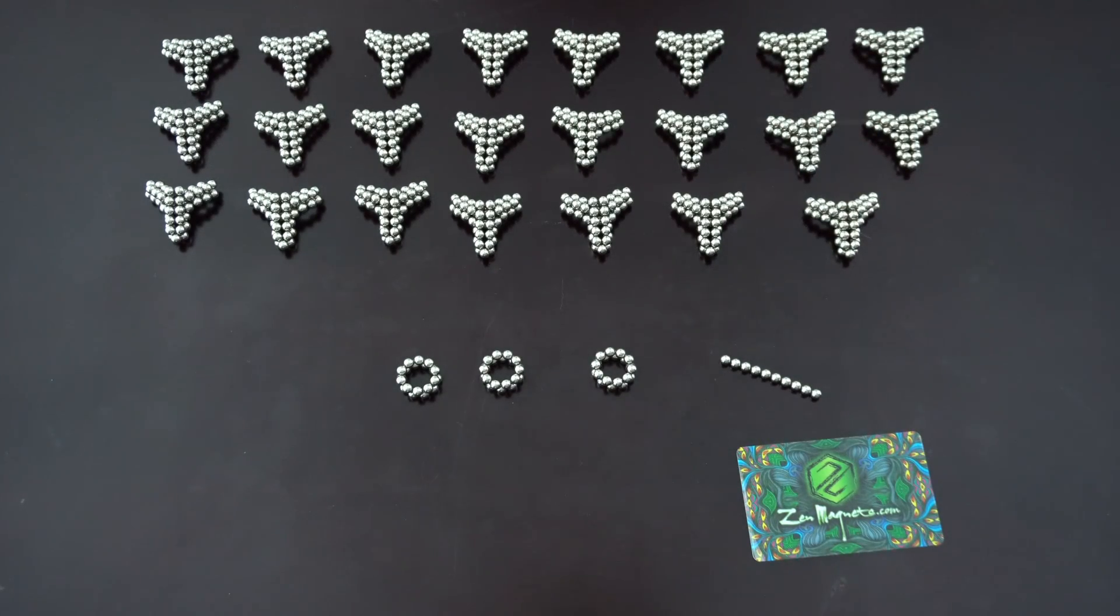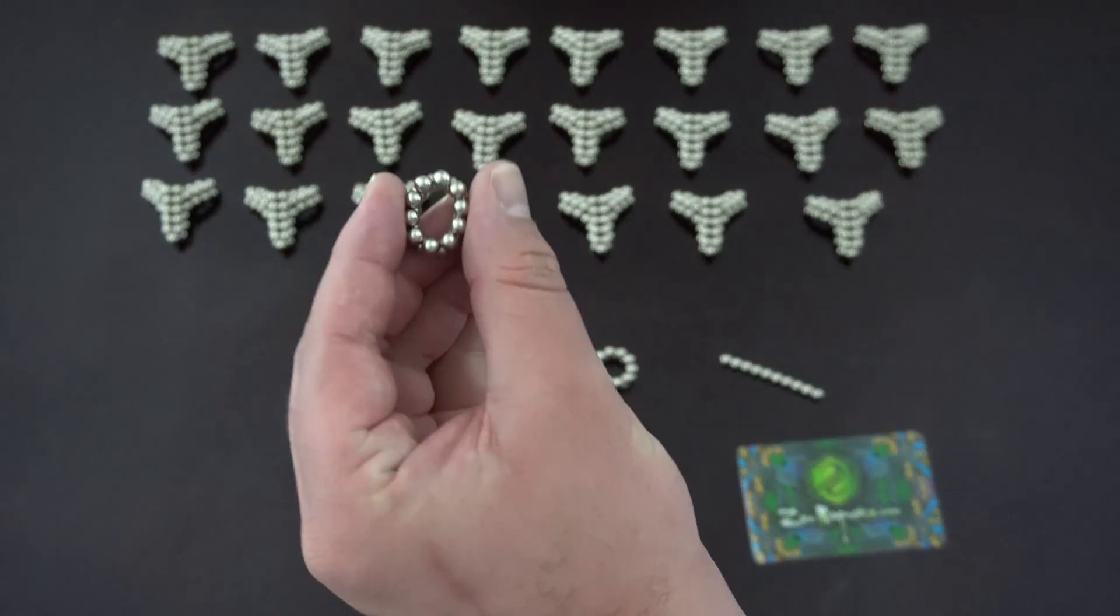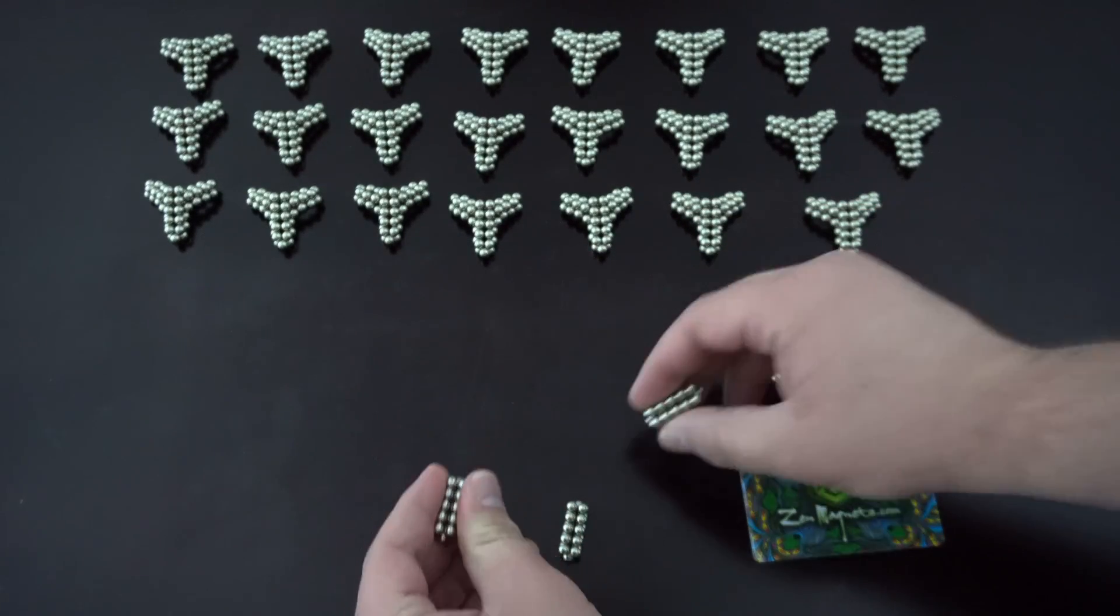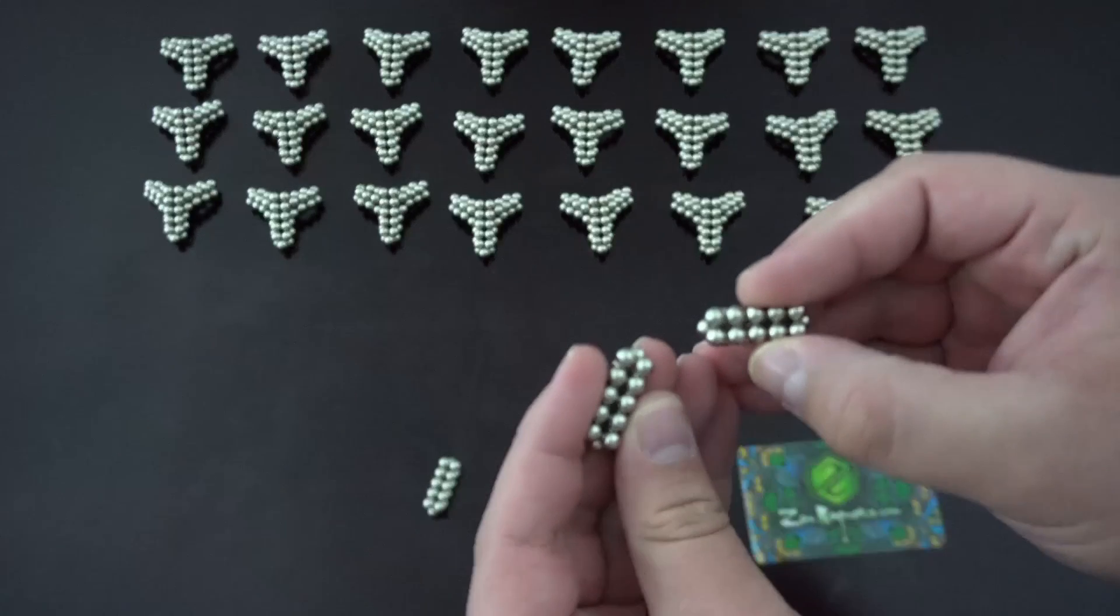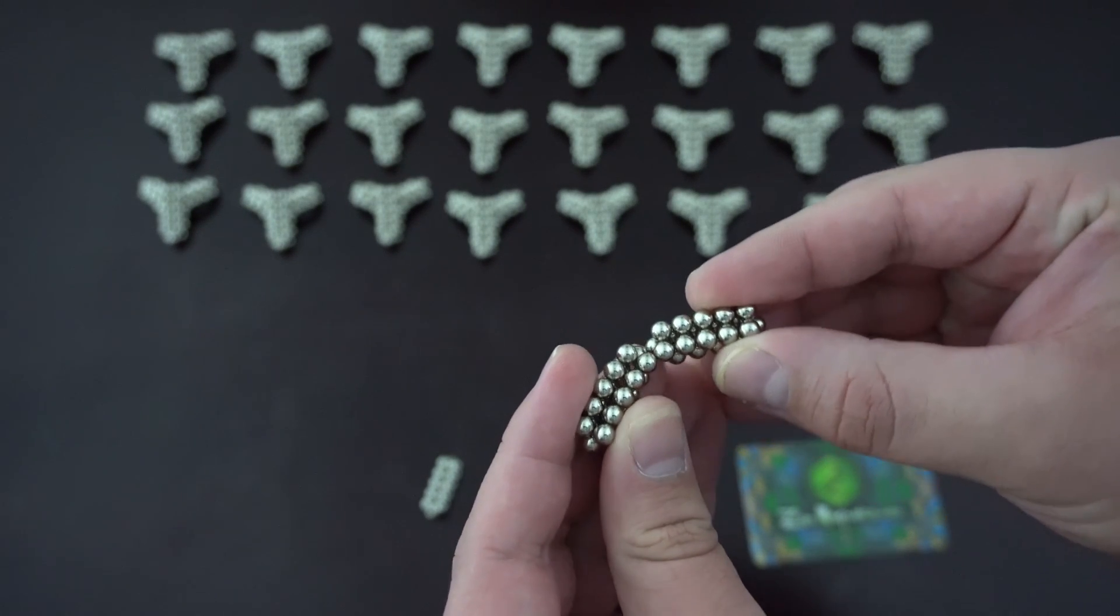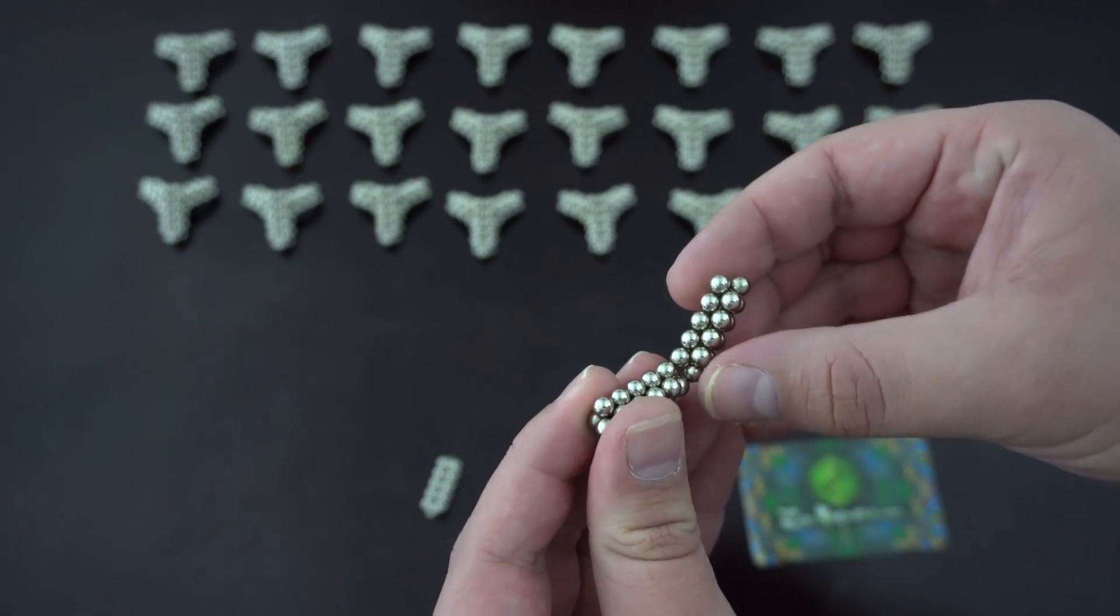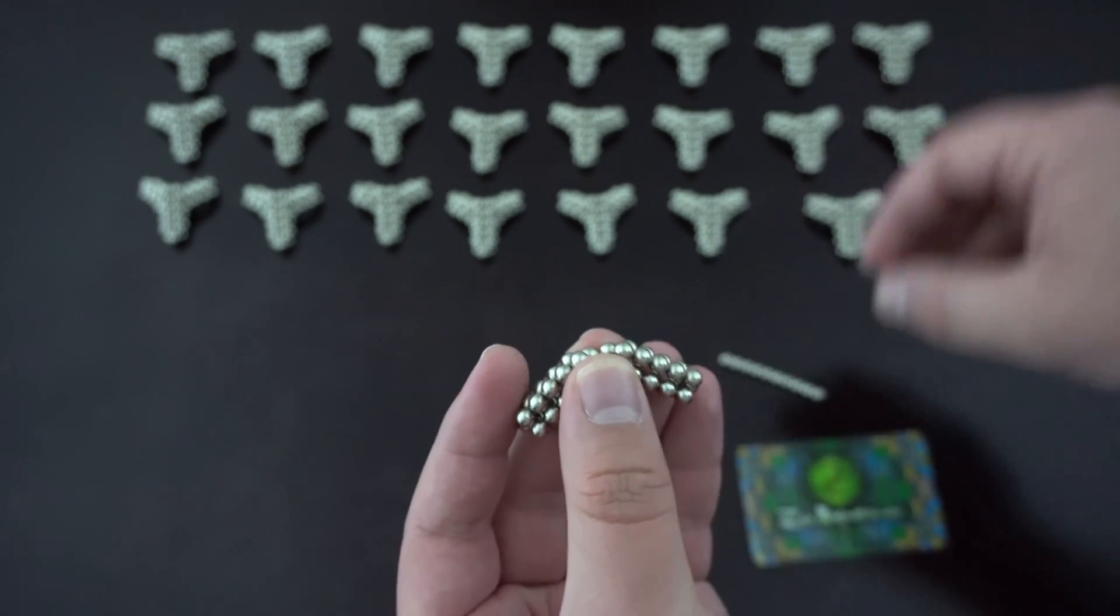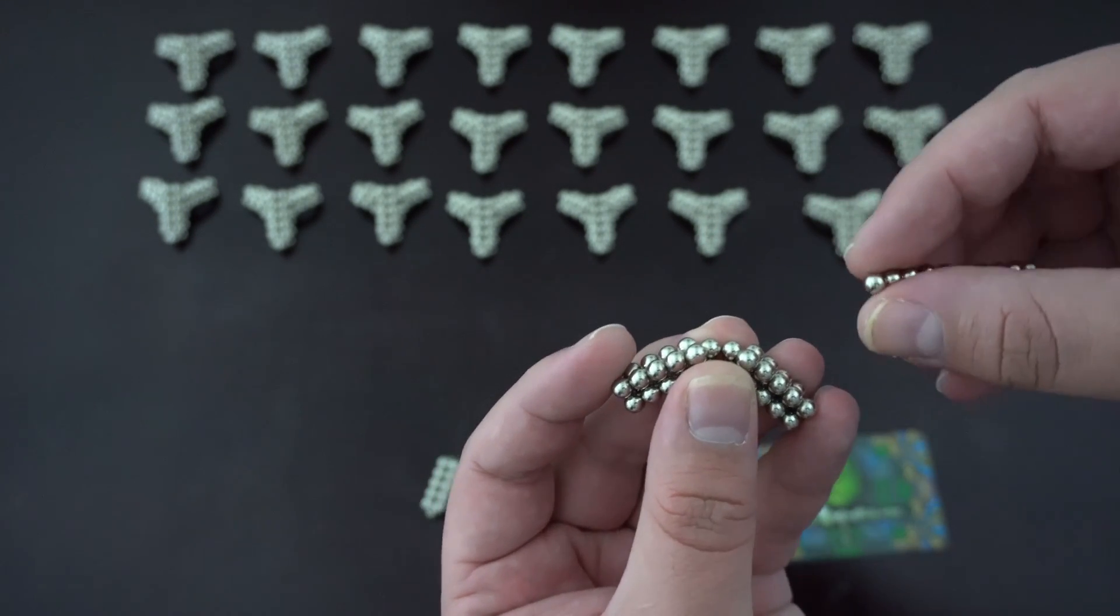So to make the subunit, you start off with these, flatten them into straight pieces. Two of them get attached together like that. Note that these two magnets don't touch. Then you take some extra magnets.